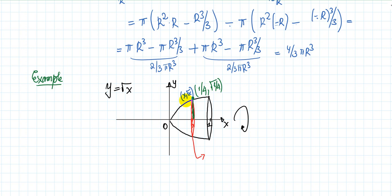What will be the area of this red part? The area, which depends on x, is equal to the radius — which is square root of x — squared, multiplied by pi, or simply pi times x. So depending on where you're cutting, you can find the areas of the slices. For example, if you cut at x equals 1, the area is just pi. If you cut at x equals 0, the area is 0. You basically have a function: input is x, output is the area of the slice.